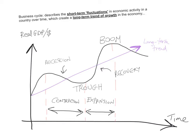The business cycle describes the short-term fluctuations in economic activity in a country over time, which create a long-term trend of growth in the economy. Every economy goes through fluctuations in the short run — sometimes very fast, very positive economic activity, and then it slows down. But if you average out these short-term fluctuations, it gives you the long-term trend of growth. You have to differentiate between the short-term fluctuations and the long-term trend of growth.